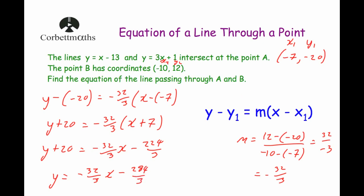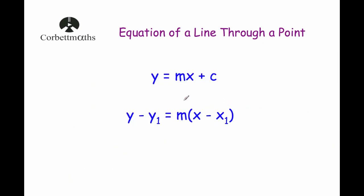So the equation of a straight line through a point: if you know the gradient, you can use y equals mx plus c, or you could use the equation y minus y1 equals m bracket x minus x1.